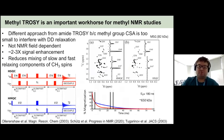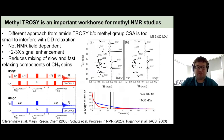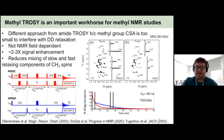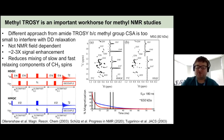Methyl TROSY is one of the most important things developed for methyl NMR studies of large proteins, pioneered by Vitaly Tugarinov and Lewis Kay. For an 82 kilodalton MSG protein, you get signal enhancement of about two- to threefold. The difference between the TROSY-HMQC versus the HMQC involves a couple of changes in pulses that reduce the mixing of slow and fast relaxing components of your methyl spin. For a 650 kilodalton protein, you can really see that the HMQC experiment retains much more magnetization. A recent review by Schutz and Sprangers in Progress in NMR covers the spin physics in detail.